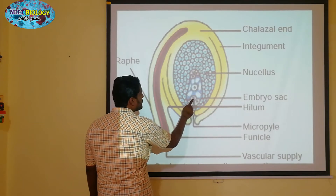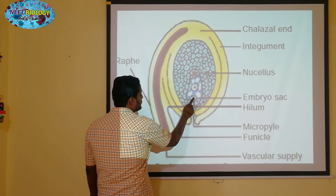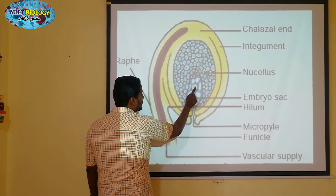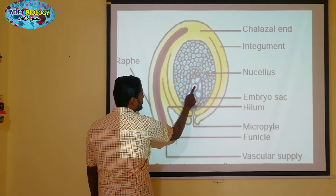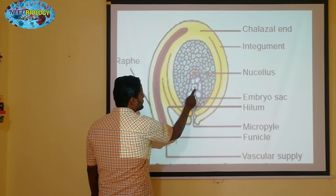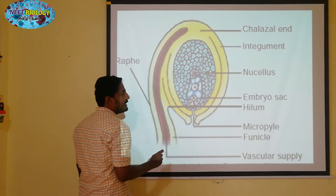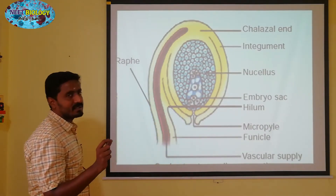The egg will also be used to form a zygote. This is called triple fusion, and this is called normal syngamy. In total, we call this double fertilization.